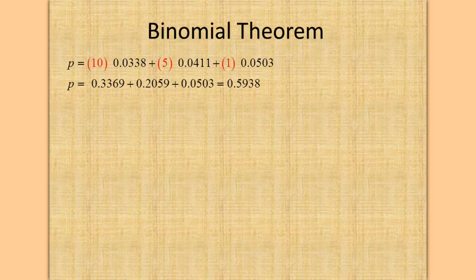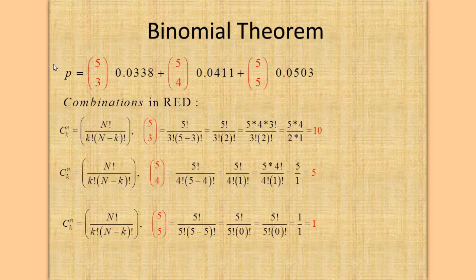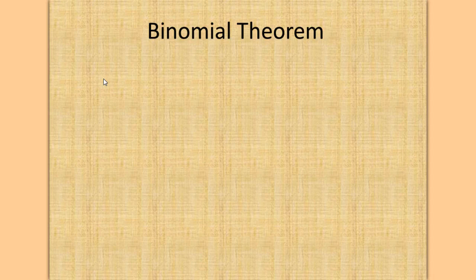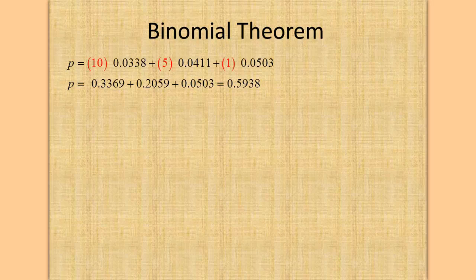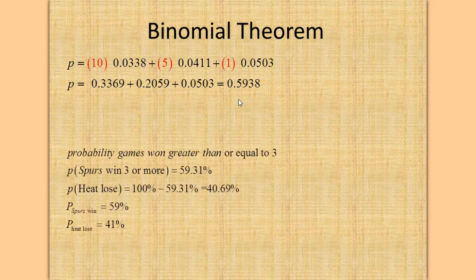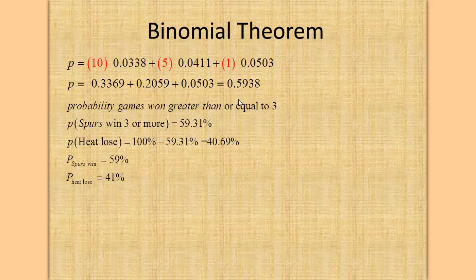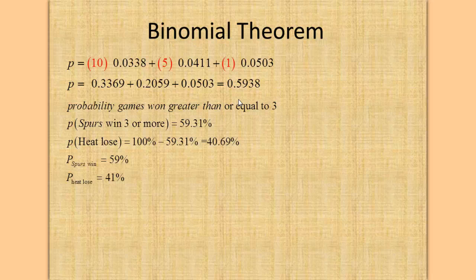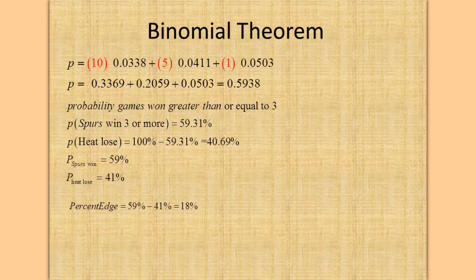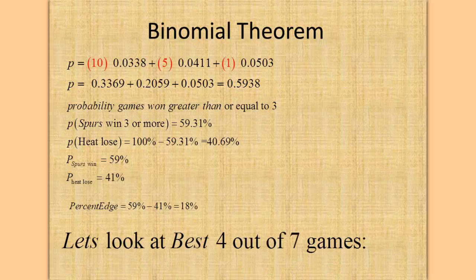We multiply the combinations by our numbers — plugging in the red combinations 10, 5, and 1 — and we get a probability of 0.538. The probability of the Spurs winning 3 or more games is 59.3%. The probability that the Heat wins is 100% minus 59.31%, which equals 40.69%. So the Spurs win probability is approximately 59% and the Heat's is 41% — an 18% edge for the Spurs in the best 3 out of 5 series.